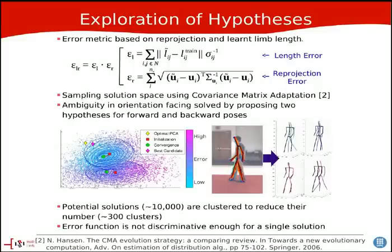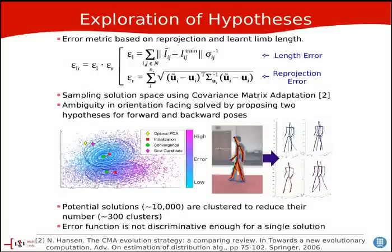We have an additional problem, which is that the 2D body part detector does not give us the orientation or the direction the person is facing. So we have to swap the left and right Gaussians and propose 2 hypergaussians for both directions, so the person can be facing either forwards or backwards, and we sample these at the same time. From here we obtain roughly around 10,000 solutions, which we then cluster down to 300. We find also that the error function we propose based on the length and reprojection error is not discriminative enough to obtain a single solution.